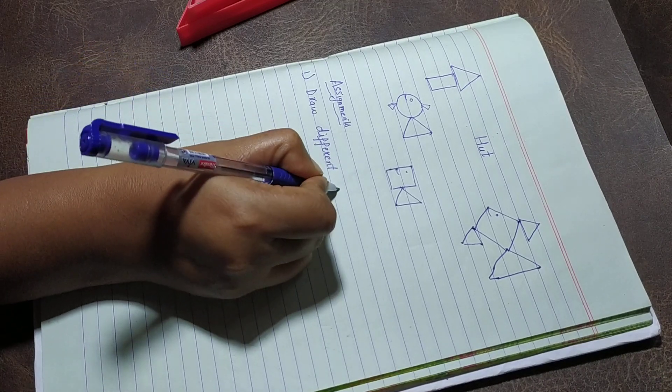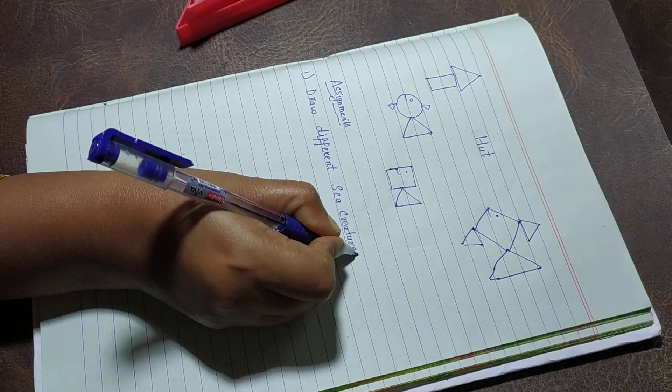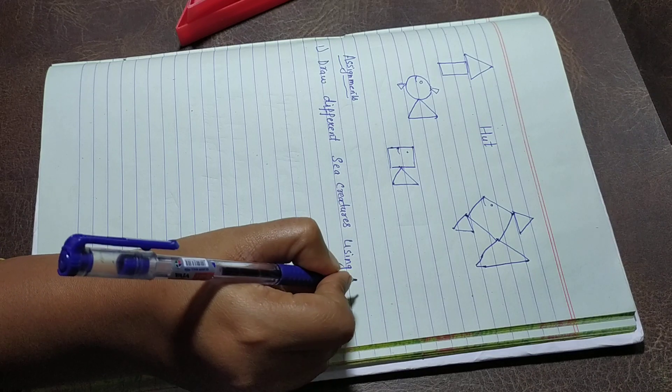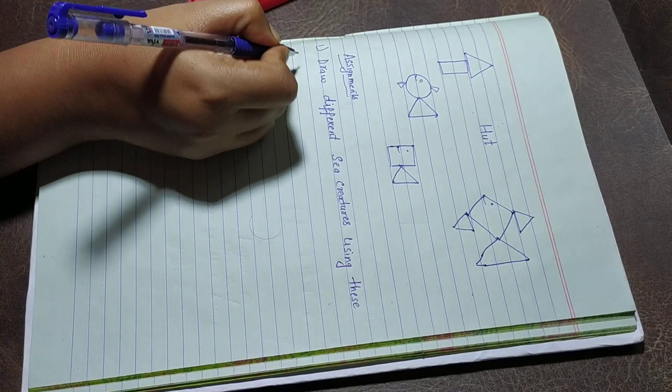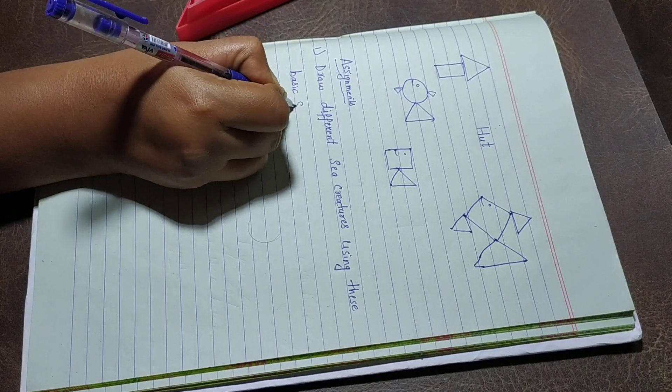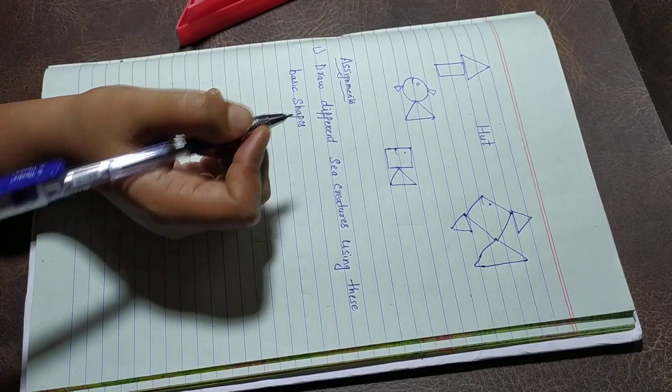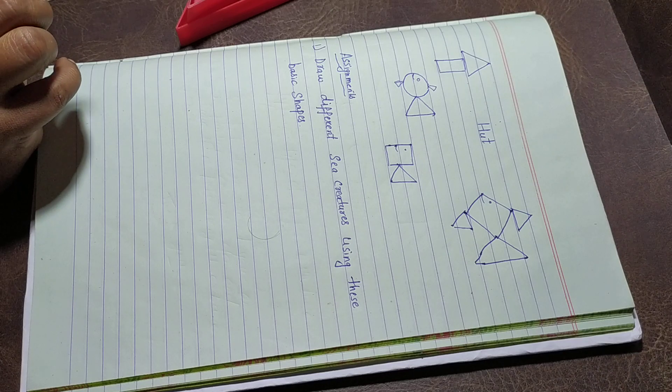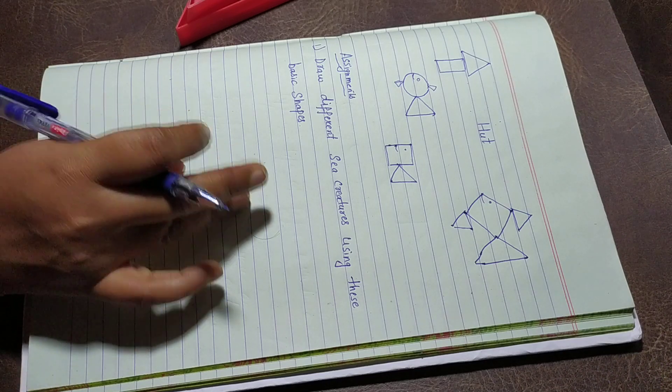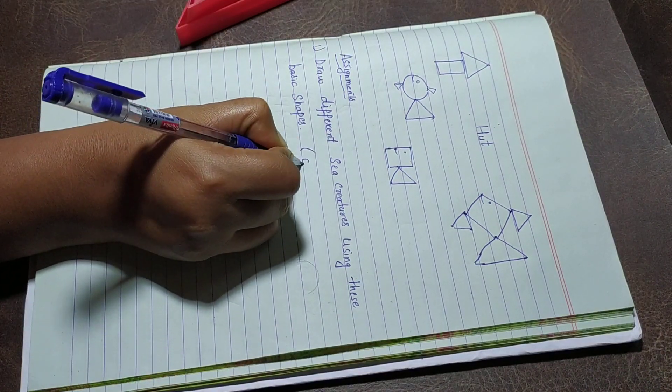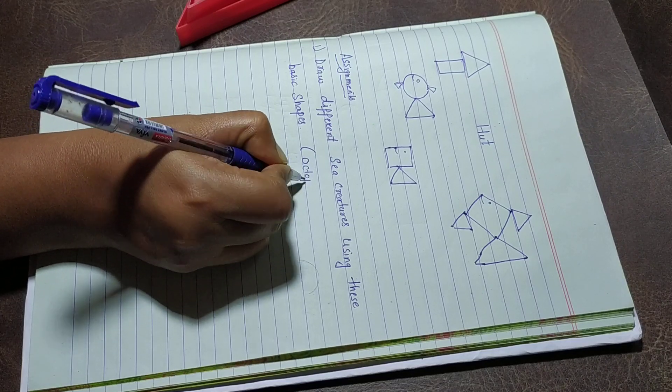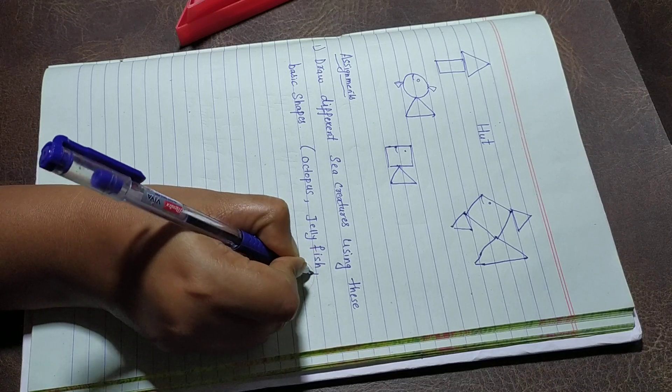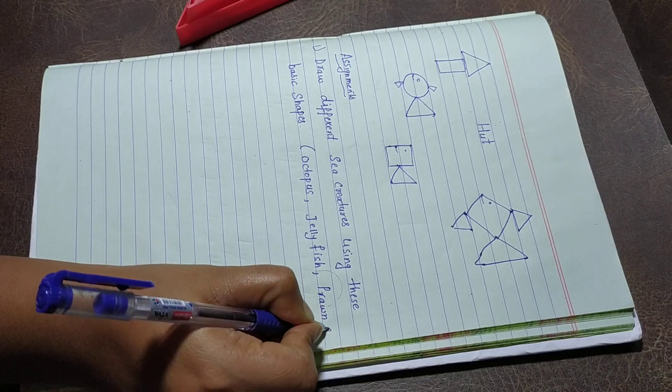So you will draw different sea creatures using these basic shapes. The creatures can be octopus, prawn, parrotfish, cuttlefish, jellyfish, etc. I'll write some of the names here: octopus, jellyfish, prawn, etc.